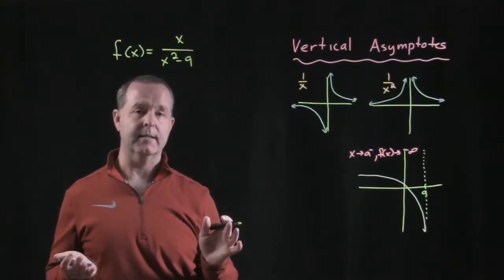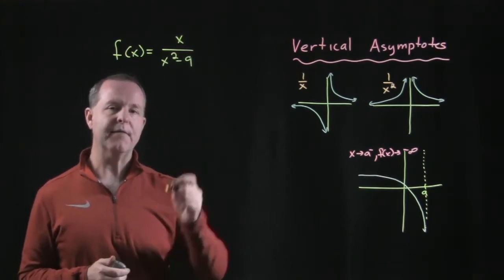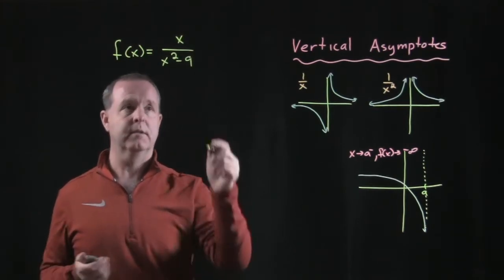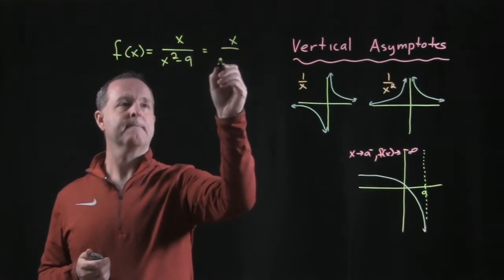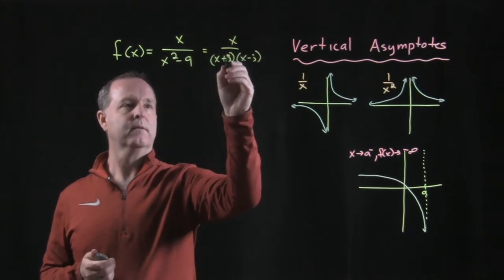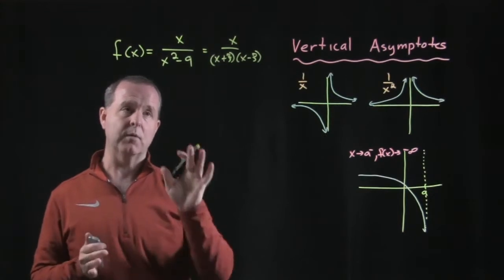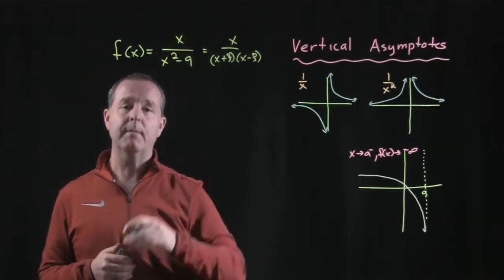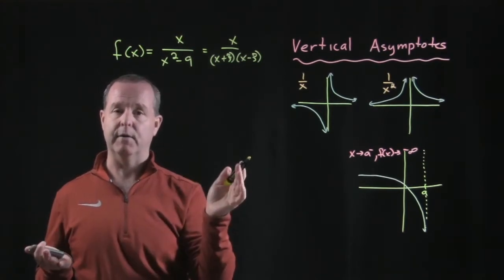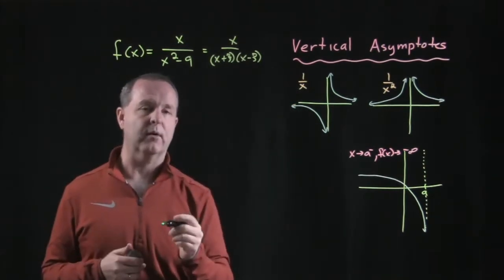Example, f of x equals x over x squared minus 9. How do we locate its vertical asymptotes if it has any? Well we look at the ratio of the numerator versus the denominator and see if there's any common factors first. So this would equal x over (x plus 3) times (x minus 3). There's no common factors in the numerator and the denominator. So my vertical asymptotes are the places where the denominator becomes 0, so that's at negative 3 and positive 3.